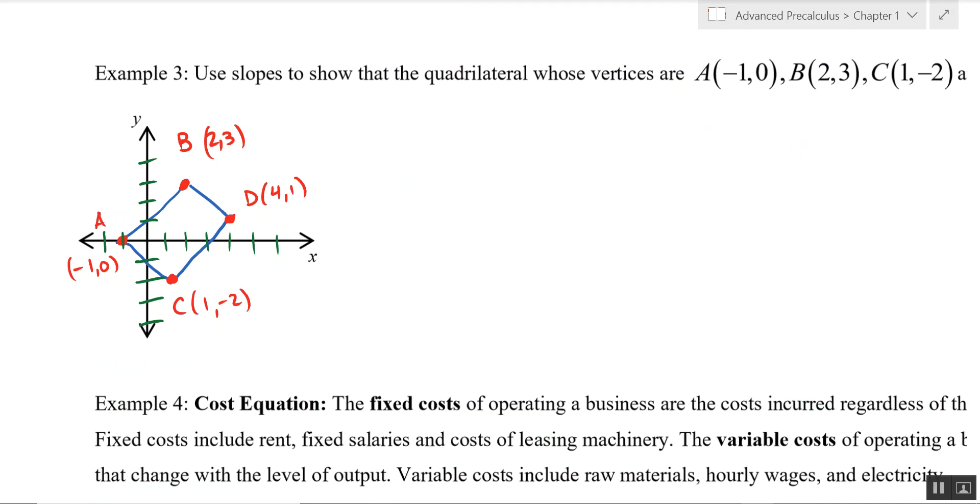Alright, this example, we're going to use slopes to show that this quadrilateral is in fact a rectangle. And I've graphed all these points over on the graph on the far left. Let's see if we can prove this algebraically. Let's calculate the slope of each of these segments. First off, the slope of AB. Make sure you show what you're doing. We're going to see the rise over the run or difference in your y coordinates. 3 minus 0 and 2 minus negative 1 or 2 plus 1. 3 over 3 winds up being 1. Go ahead and repeat this process for the other 3.